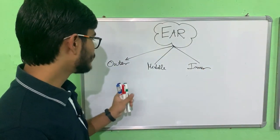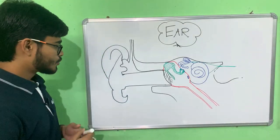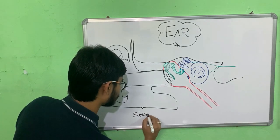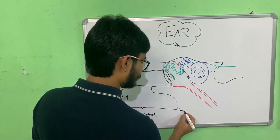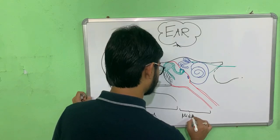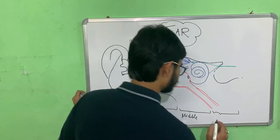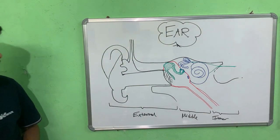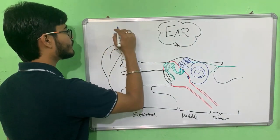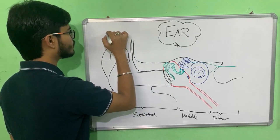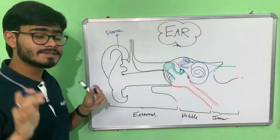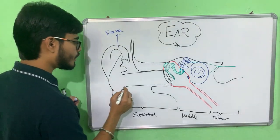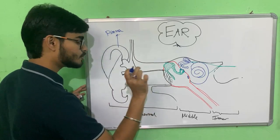I'm going to draw a diagram which will help you understand this. From here to here is the external ear — I'll mark the landmarks. From here to here is the middle ear, and the rest is the inner ear. The entire outer part of the external ear is called the pinna. Its function is to catch the sound waves coming in and direct them towards the ear cavity.